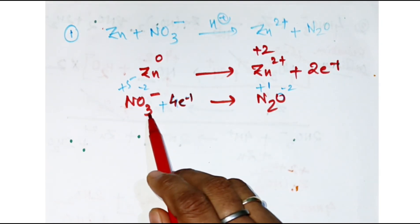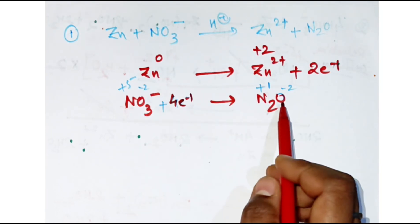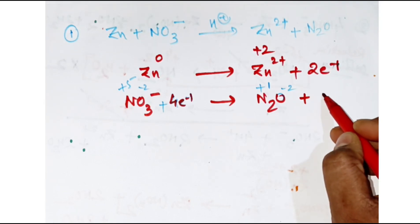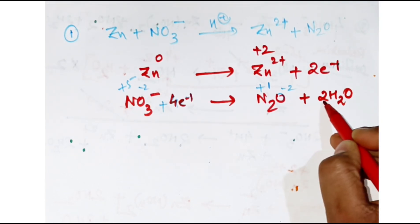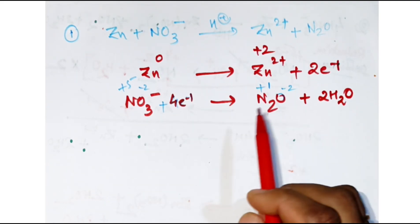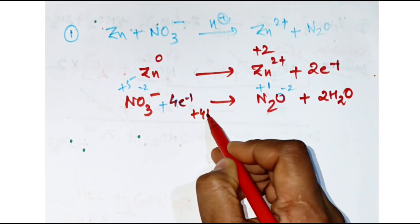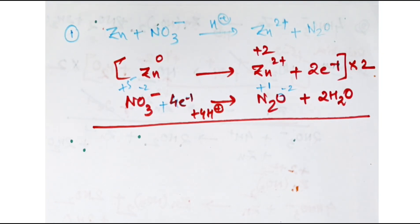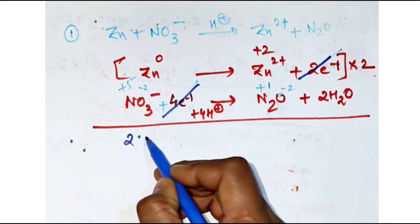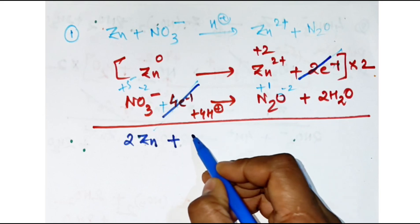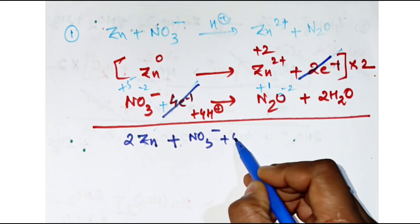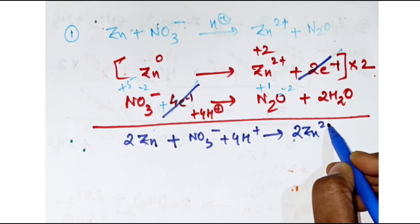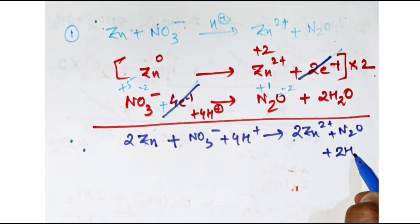In the NO₃⁻ → N₂O half-cell, oxygen must be balanced: 3 oxygens on left, 1 on right, so add 2 H₂O on the right — 3 oxygens balanced. Then add 4 H⁺ on the left since it is acidic medium. Multiplying the Zn half-cell by 2 to balance 4 electrons on each side, the final balanced equation in acidic medium is: 2 Zn + NO₃⁻ + 4 H⁺ → 2 Zn²⁺ + N₂O + 2 H₂O.